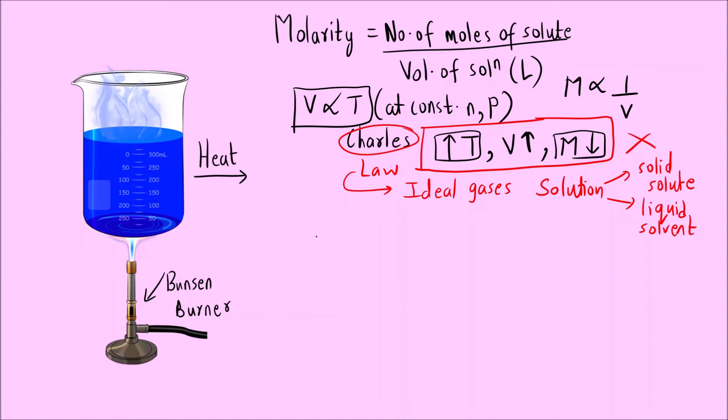So, let us try to understand then what will happen exactly to a solution when I heat. Suppose this is the solution level initially and let us say there are 1, 2, 3, 4, 5 sugar molecules. This is a sugar solution. What I do? I heat the solution.